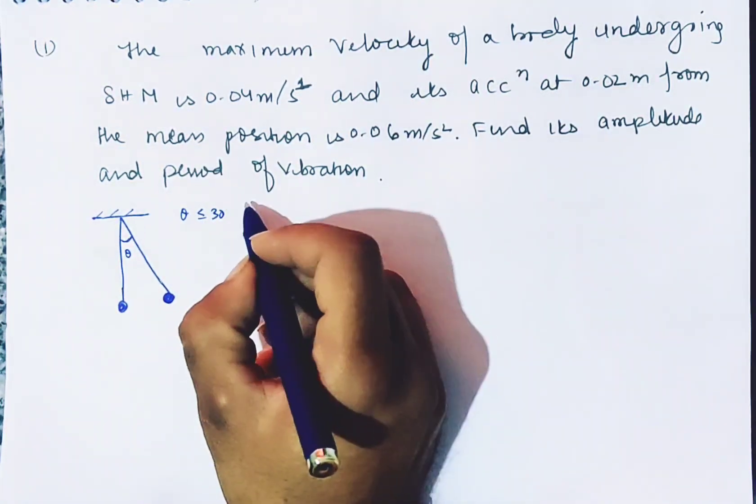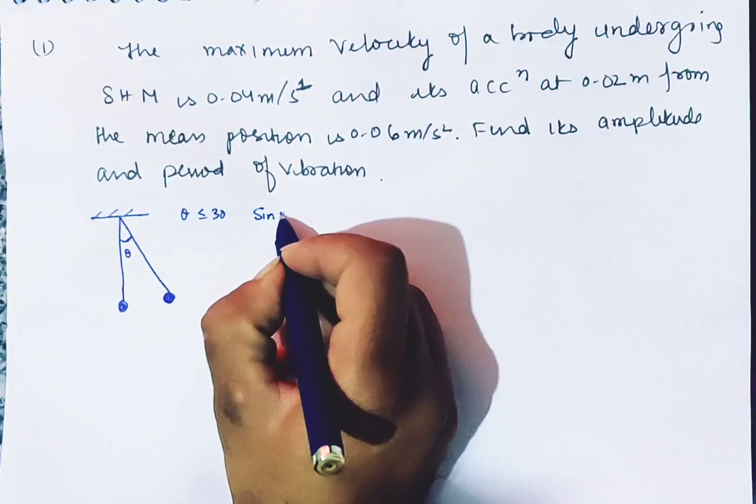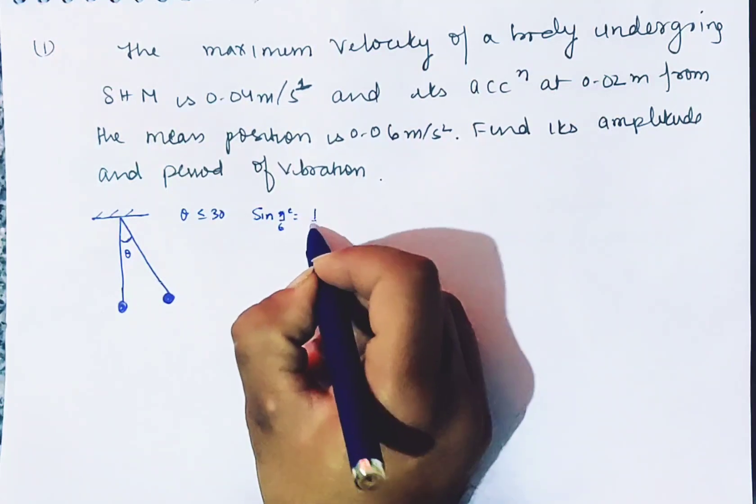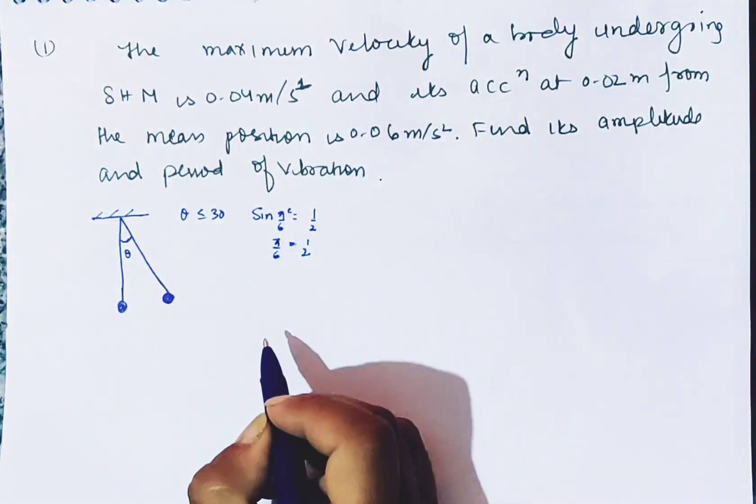At 30 degrees, sin theta equals theta. Because you can see that sin pi by 6 radian is 1 by 2, and pi by 6 in the form of 1 by 2 is solved.